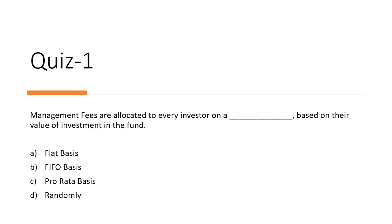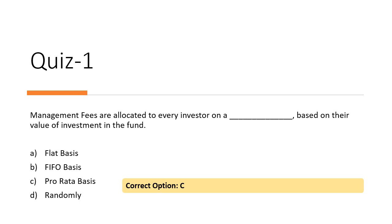The first question: management fees are allocated to every investor in an Alternative Investment Fund on dash-dash-dash basis, based on their value of investment in the fund. The options are: flat basis, FIFO basis (first in first out), pro-rata basis, or randomly. The correct answer is C — fee allocation is on a pro-rata basis.